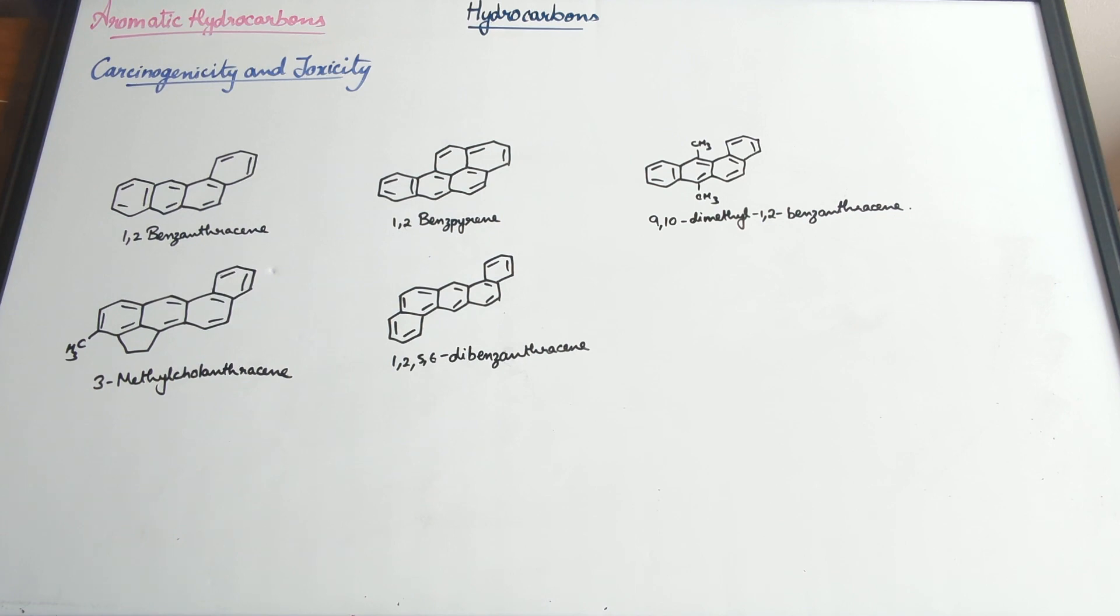We learned about the isomerism, the conformational isomerism in alkanes. Then we started with alkenes—alkenes have the general formula CnH2n—and we talked about the structure of the alkene, how the double bonds are formed, what are the kinds of isomers that you observe in alkenes, the various methods of preparation, the physical properties.